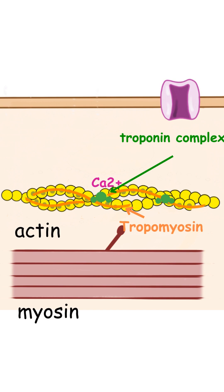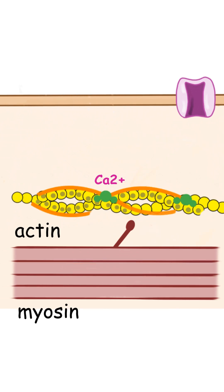As soon as the actin-binding sites are exposed, the contractile proteins actin and myosin can form a cross-bridge, and thus the muscle cell contracts.